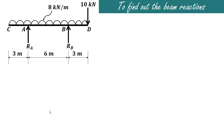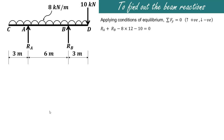Now let us find the beam reactions by applying the conditions of equilibrium: summation of forces in the y-direction equals zero. Upward forces are considered positive and downward forces negative. Ra and Rb acting upward are positive. The 10 kilonewton load acting downward is negative. The uniformly distributed load of 8 kilonewtons per meter acts over the total length of 3 plus 6 plus 3, which is 12 meters. So 8 into 12 gives the total UDL. Therefore Ra plus Rb equals 106 kilonewtons.